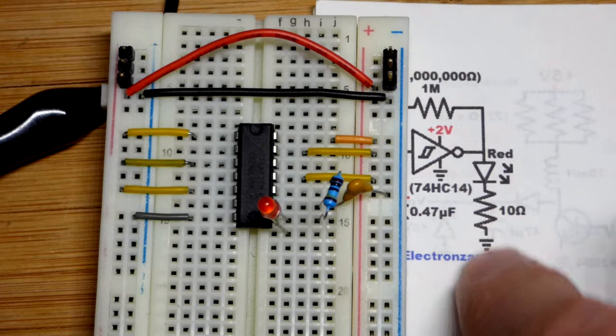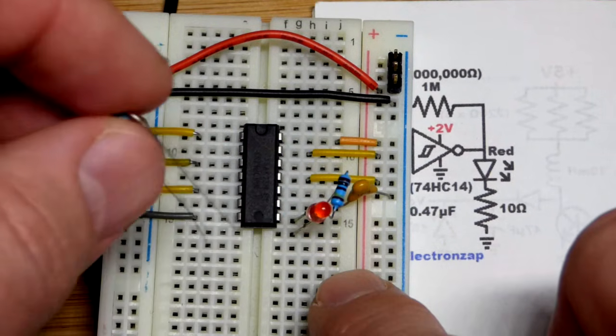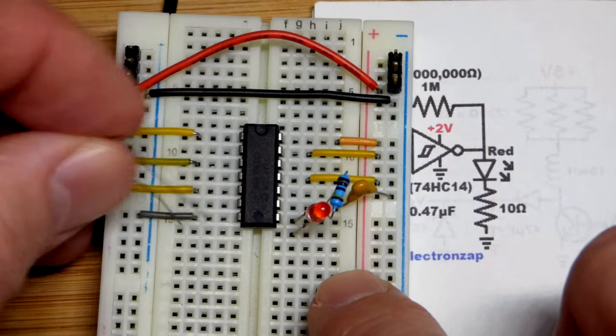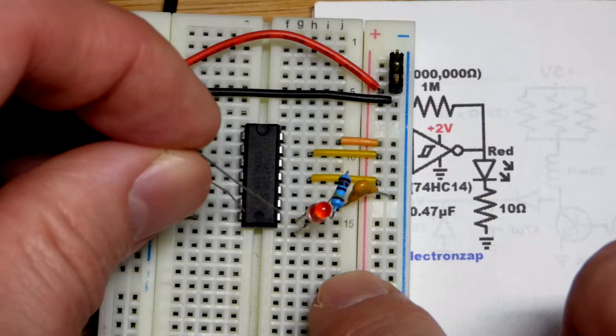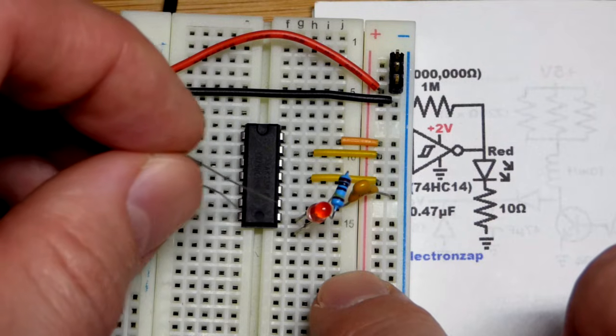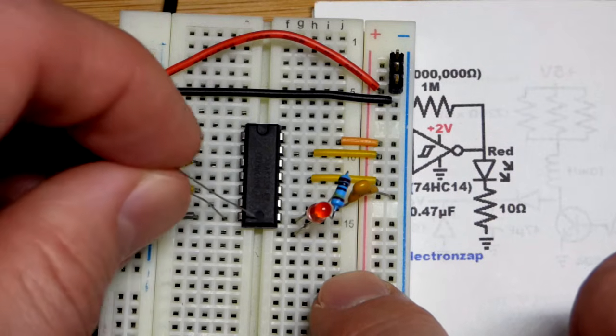Long lead anode has to be to where it's going to be more positive when it lights up, then cathode. Since it's headed to ground, you want the cathode headed to ground. We're going to put it through a resistor though.